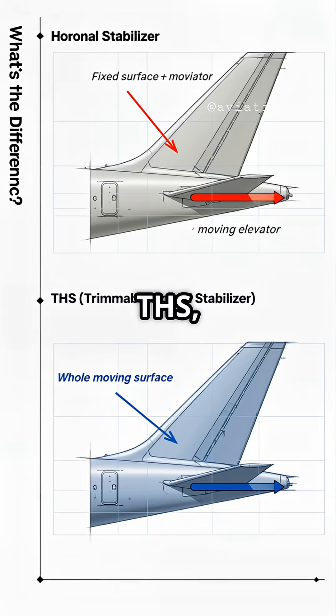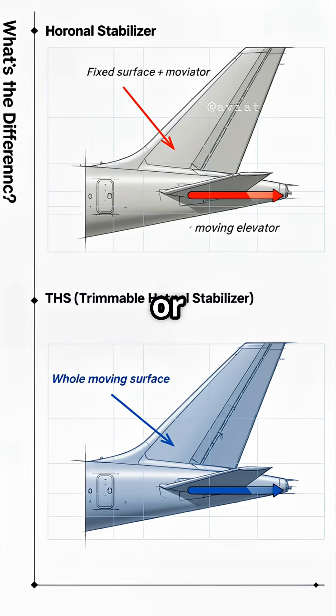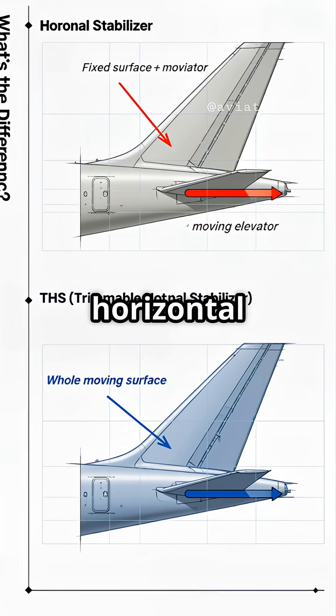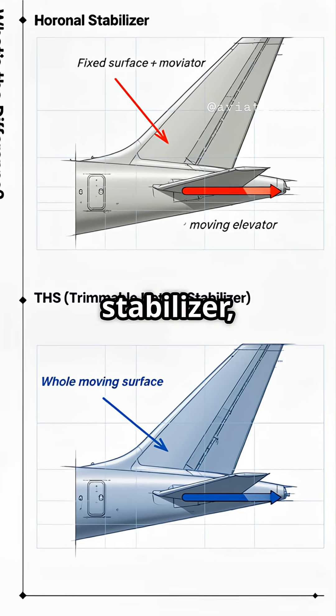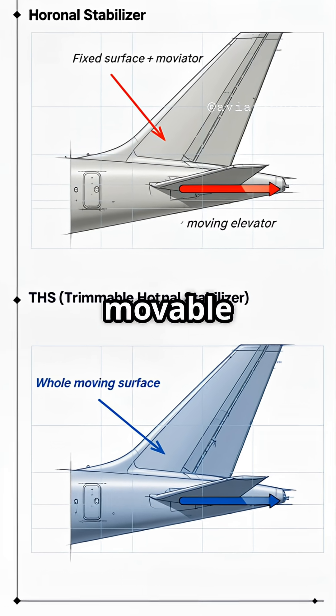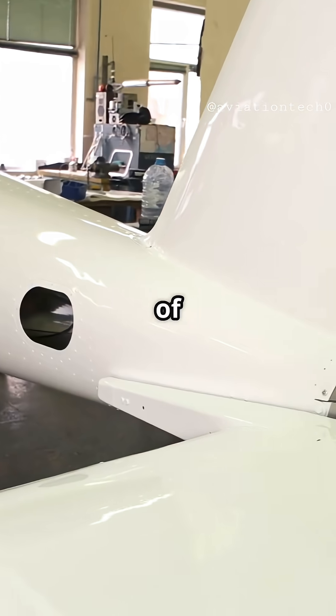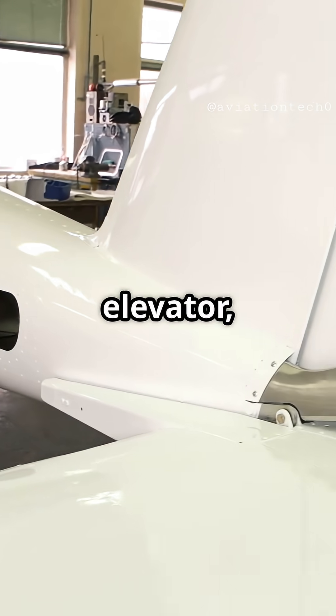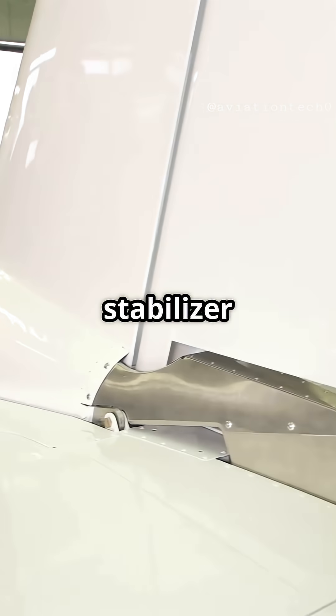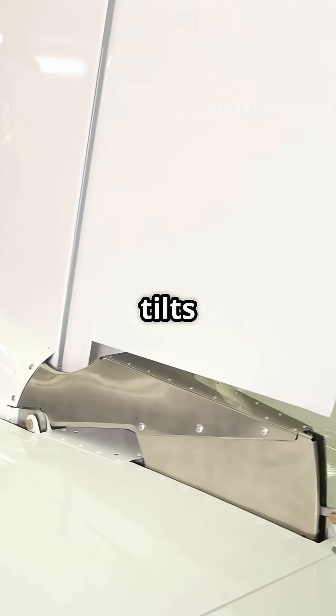But a THS, or Trimmable Horizontal Stabilizer, is a moveable version of that stabilizer. Instead of just moving the elevator, the entire stabilizer surface tilts to trim the aircraft's pitch.